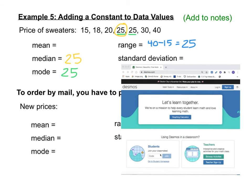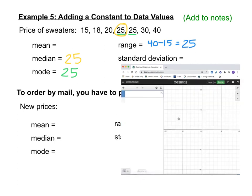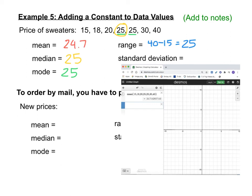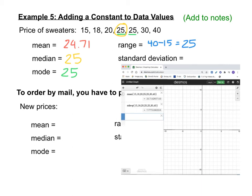Go to Desmos.com and click the graphing calculator button. Now that we know the commands, you can type the word 'mean' followed by your values in parentheses separated by commas: 15, 18, 20, 25, 25, 30, 40. Hit enter — the mean is $24.71. To get the standard deviation of the population, type 'stdevp' and paste in the same list of values. The standard deviation is about 7.78.